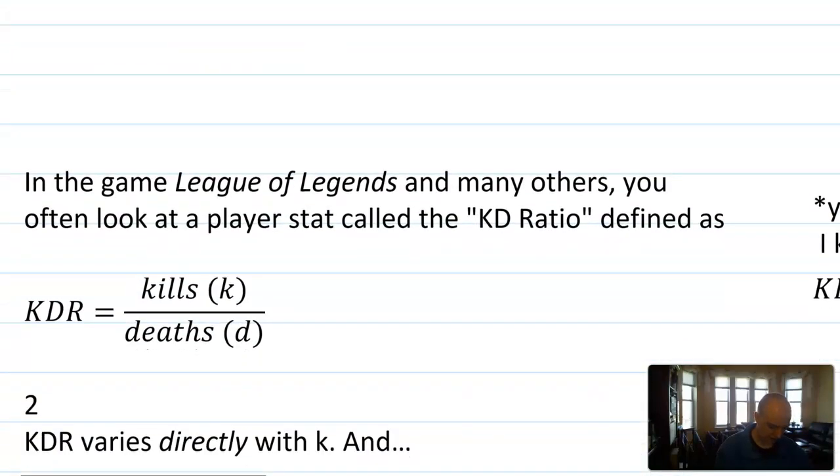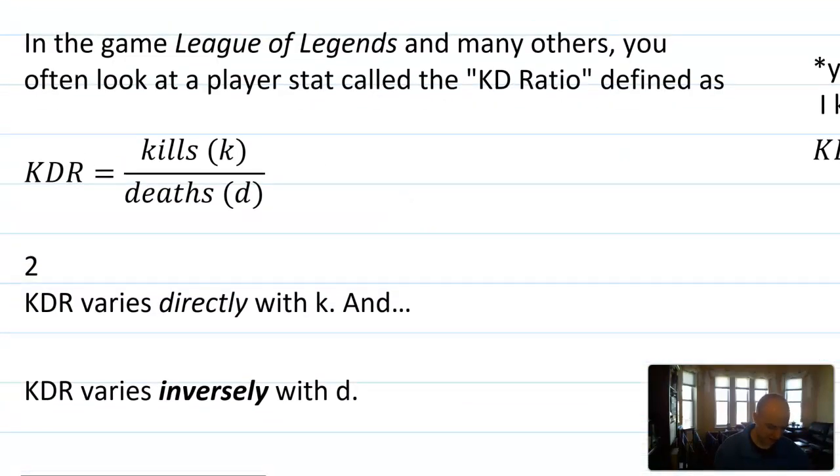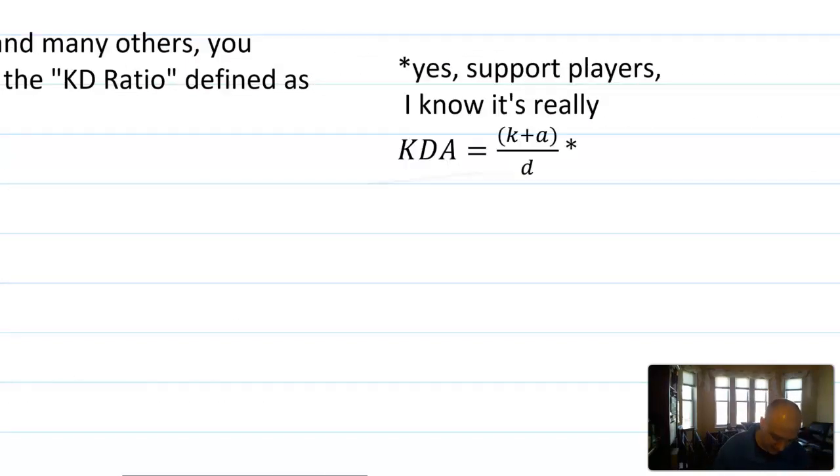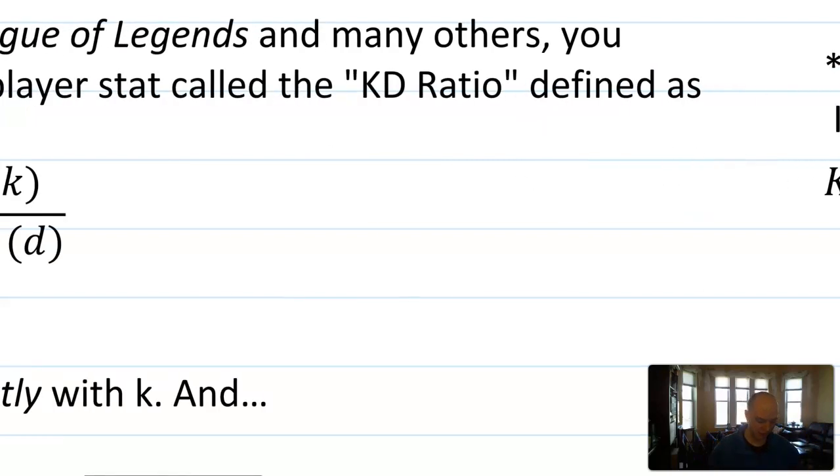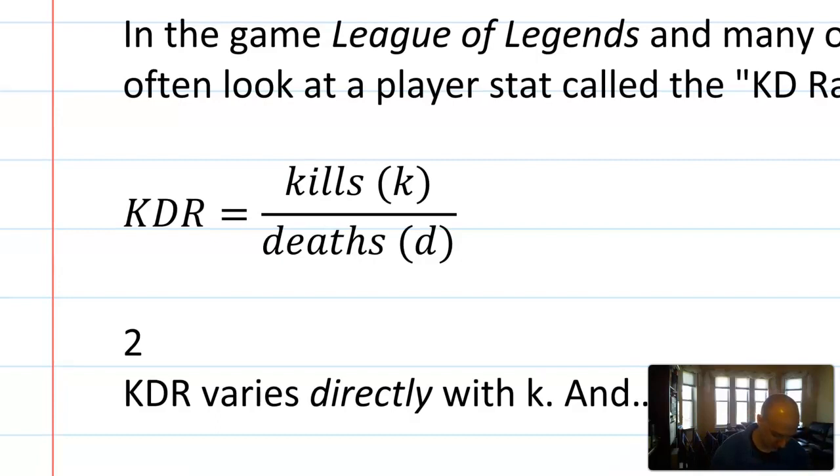Let's look at another real world example. In the game League of Legends and many other games, you often look at a stat called the KD Ratio. It stands for Kills to Deaths Ratio. And it's defined as KDR is the number of kills that you make in this game divided by the number of deaths, the times that you are killed. So if you're a good player, you have a higher KDR. If you're a worse player like me, you have a much lower KDR. And yes guys, I know, especially support players, that in League of Legends you really measure kills plus assists divided by your deaths. But just for the mathematical simplicity, we're going to go with KD, kills and deaths only.